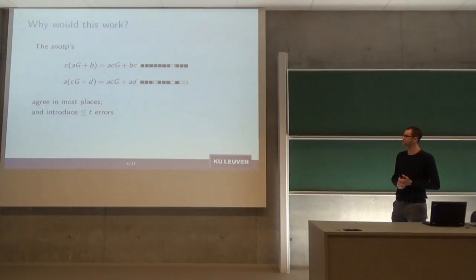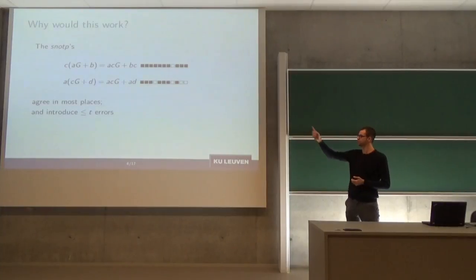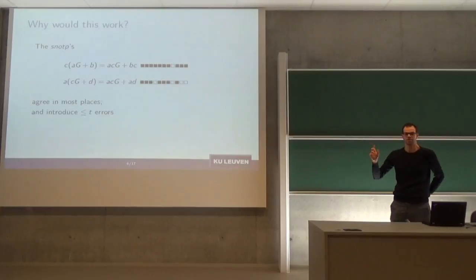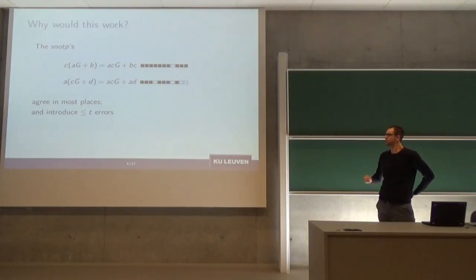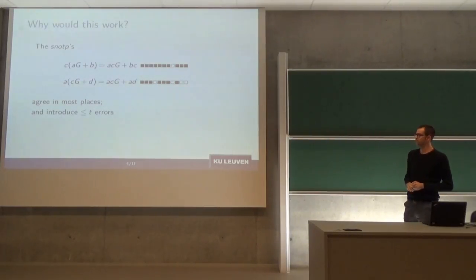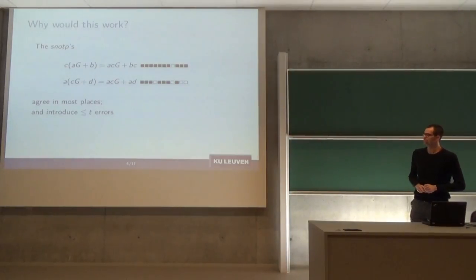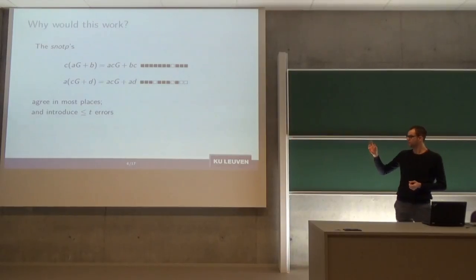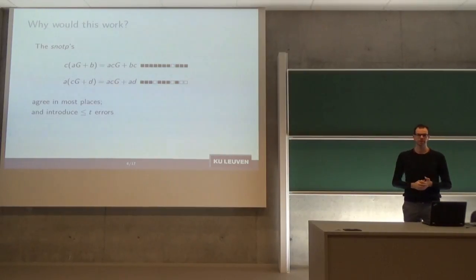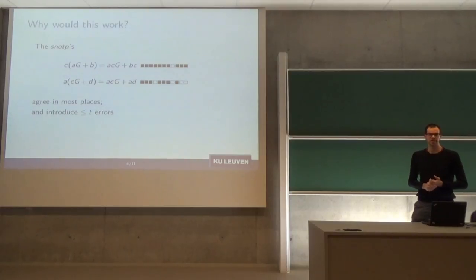Why does this work? The shared noisy one-time pad for Bob is ACG plus BC, and for Alice it's ACG plus AD. A, B, C, and D are all sparse and short, and G is the only non-sparse component. The SNOTPs match on ACG, which dominates the Hamming weight, and all errors are introduced by BC or AD. If B and C and A and D together add fewer than t errors, the error-correcting code can do its work and both parties end up with the same seed.